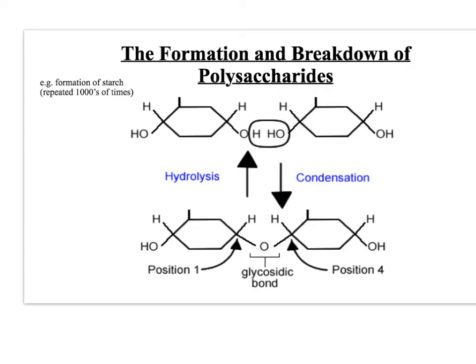Polysaccharides are made from many repeated units of monosaccharides. These join together by a process known as condensation, whereby two hydroxyl groups are used to remove a molecule of water — so you've got two H's and an O.